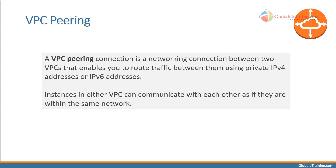VPC peering. A VPC peering connection is a networking connection between two VPCs that enables you to route traffic between them using private IPv4 addresses or IPv6 addresses. Instances in either VPC can communicate with each other as if they were within the same network.